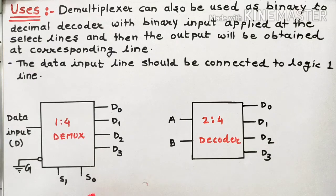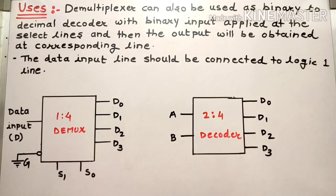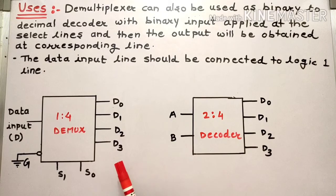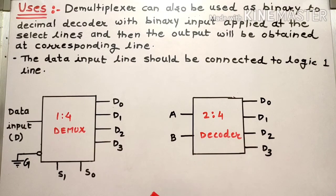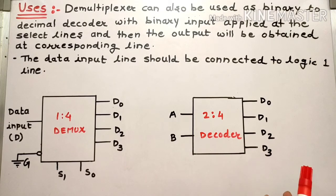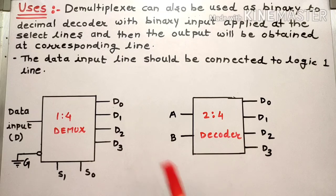There are two select lines in the case of a 1-to-4 demultiplexer. Let us discuss the similarity between a demultiplexer and a decoder. In the case of a demultiplexer there are 4 outputs, and in the case of a decoder there are also 4 outputs. We are comparing a 1-to-4 demultiplexer and a 2-to-4 decoder — both have 4 outputs from D0 to D3. This is the first similarity.